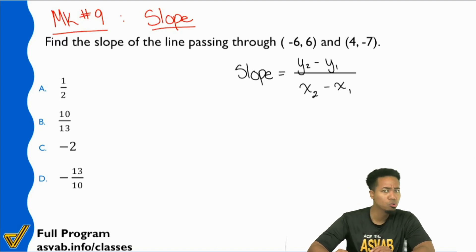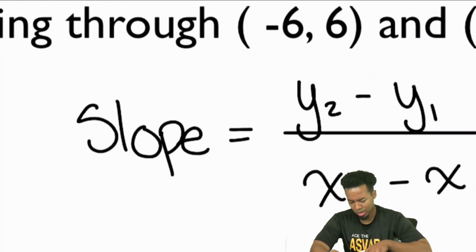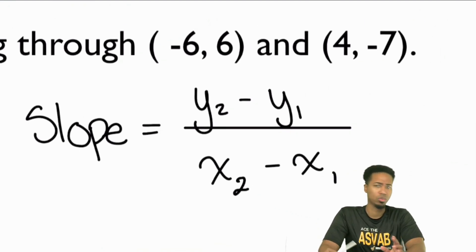And if you're confused about what the twos and the ones mean, like what the heck is, what's y2? What's y1? What's x2? What's x1? That's just basically telling you which coordinate you're looking at.